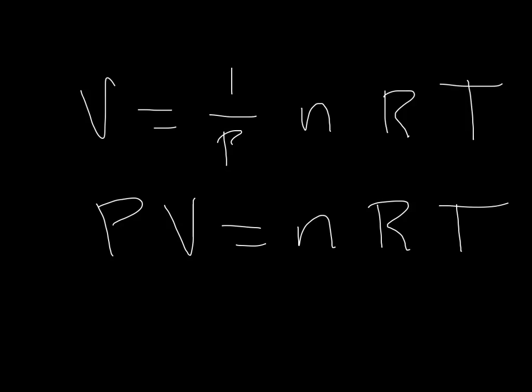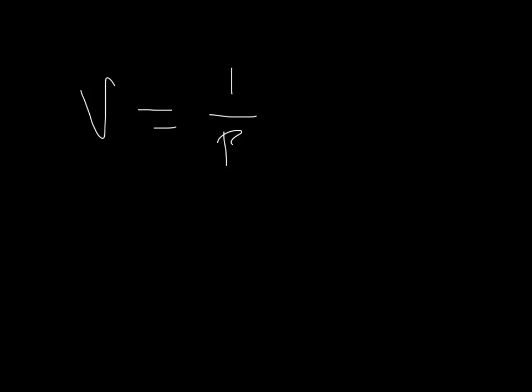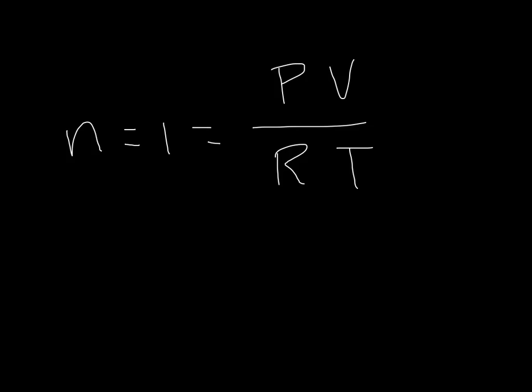So what does it mean to have ideal behavior and to follow this ideal gas law? Well, I'll tell you. When you have one mole of gas, in other words N is equal to 1, that should be equal to, according to the equation, P times V over R times T. And this should always be true under every condition. And so for now, this is how we define ideal behavior.